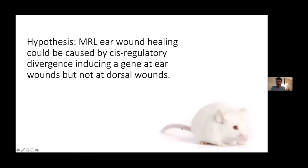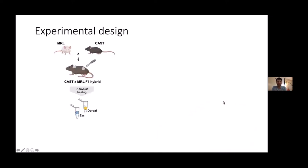This phenotype was very exciting and many labs have tried to map QTLs for it. Eight studies published since this discovery have mapped dozens of QTLs for this healing trait, yet none have led to the identification of any responsible genes, because these QTLs are so large and hard to narrow down. We approached this with a specific hypothesis: perhaps MRL ear wound healing is caused by cis-regulatory divergence that induces a gene at the ear wounds but not at the dorsal wounds. We made a hybrid between MRL mice and a regular healing strain called Castaneus.